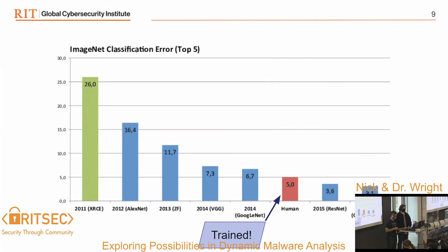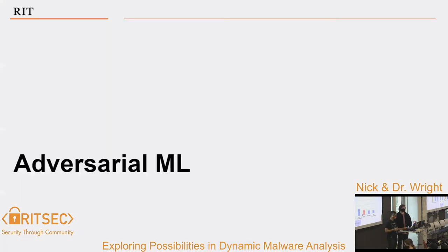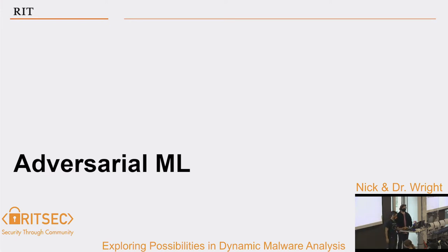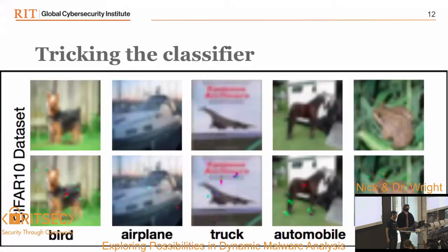Results like that are the kind of thing that lead to a revolution in computing like we see today, and that includes in security. But there's this adversarial machine learning — and adversarial, of course, in security is what we're all about. So what does this mean?